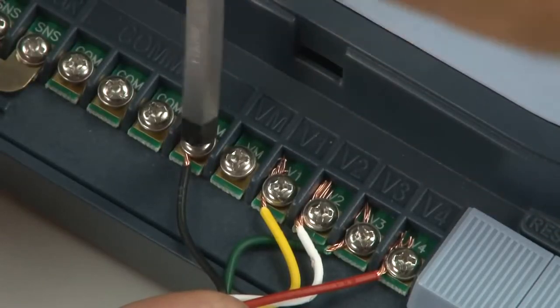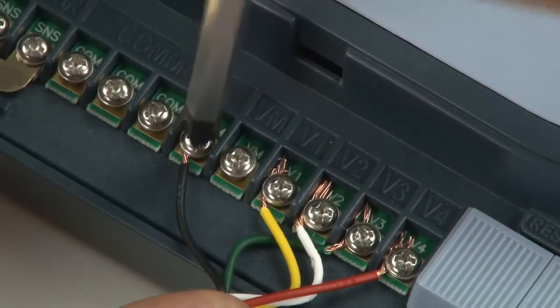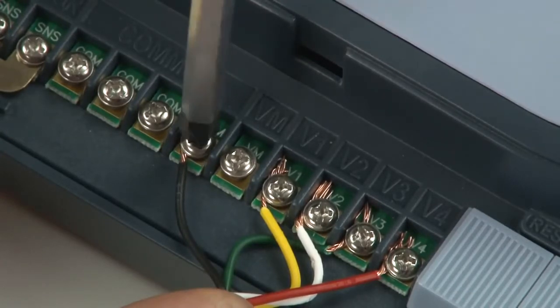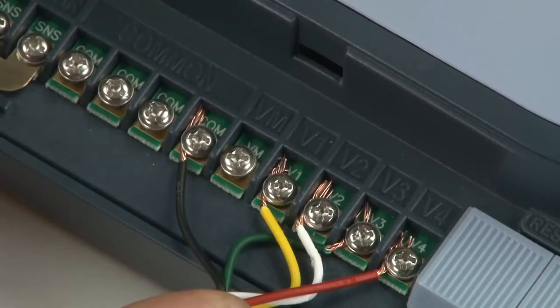The common position on irrigation controllers is often marked with the letter C, the letters COM, or the word common. Refer to your controller instructions for further information on connections.